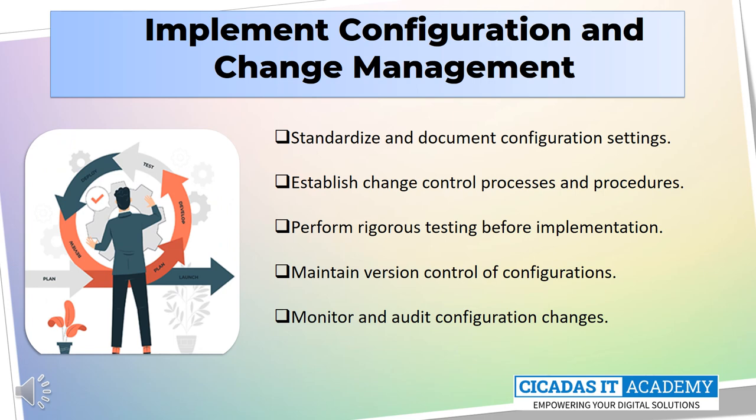This slide introduces the importance of configuration and change management policies and procedures in preventing vulnerabilities. It emphasizes the need for consistency in how changes are managed across the organization, and the use of automated tools to track changes and maintain a comprehensive inventory of all assets and configurations. The concept of a Change Advisory Board (CAB) and its role in reviewing and approving changes is introduced, along with version control and proper documentation.